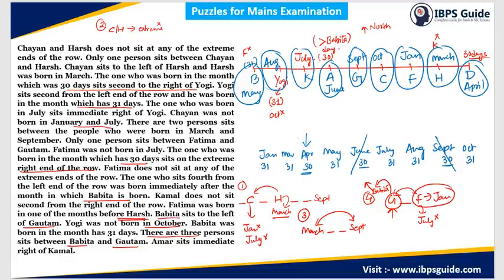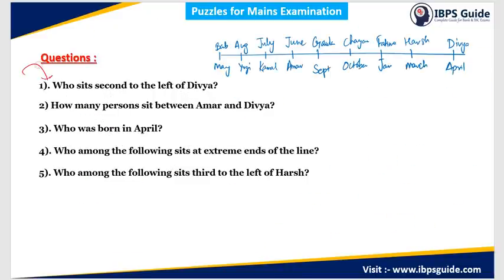The puzzle is now complete. All persons are arranged in their positions with assigned birth months. Now let's check the associated questions. Question 1: who sits second to the left of Divya? Divya is at a known position, and the answer is Fatima. Question 2: how many persons sit between Amar and Divya? Counting the persons between their positions gives 4 persons sitting between Amar and Divya.